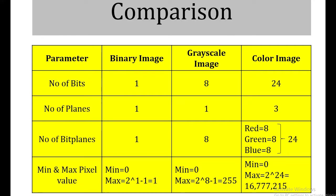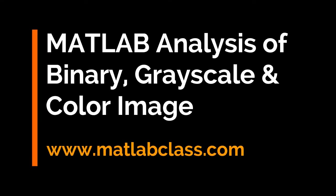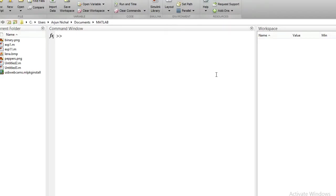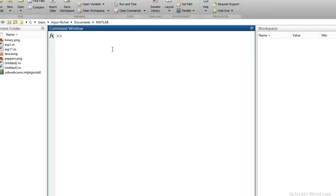Now in the second section, we are going to see the analysis of these three types of images in MATLAB. I would like to analyze all three images — binary, grayscale, and color — starting with reading the binary image.